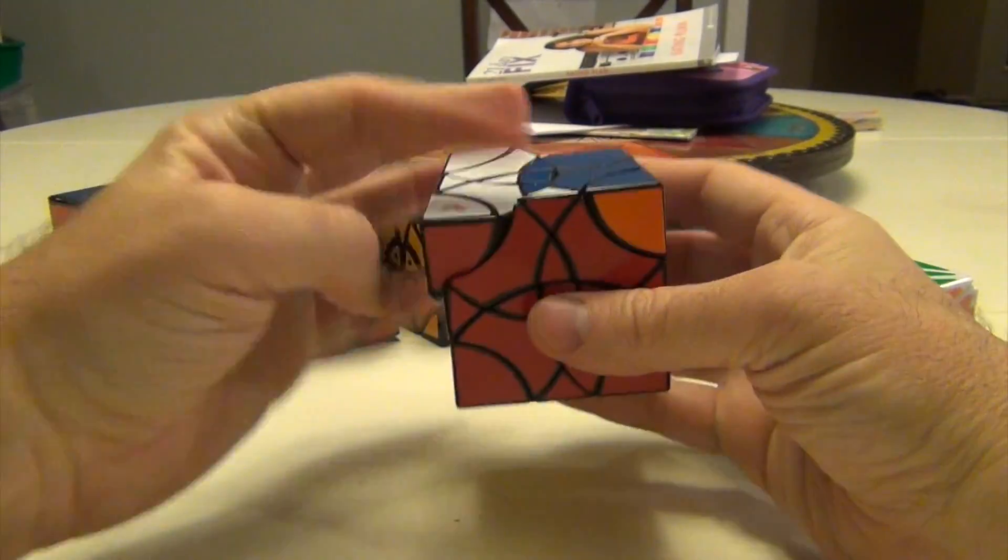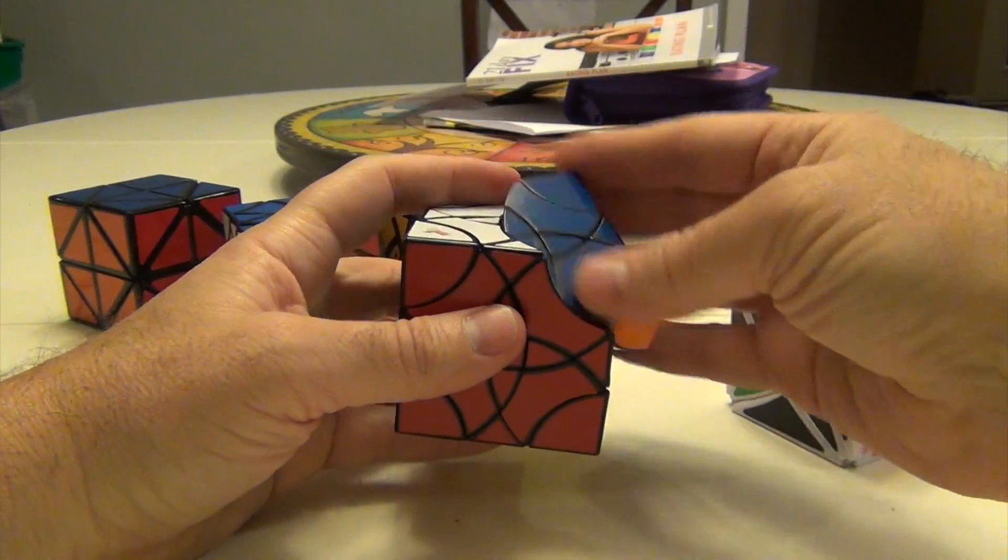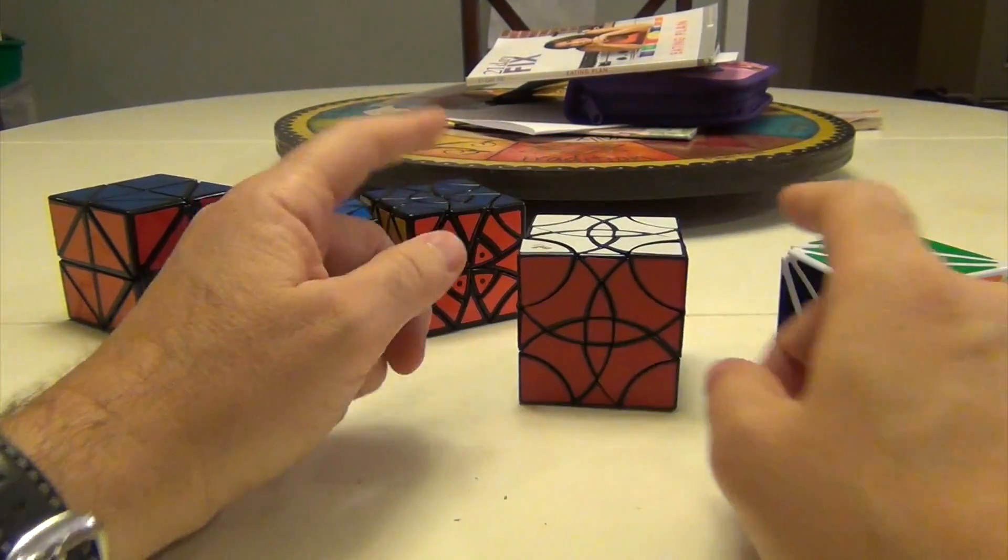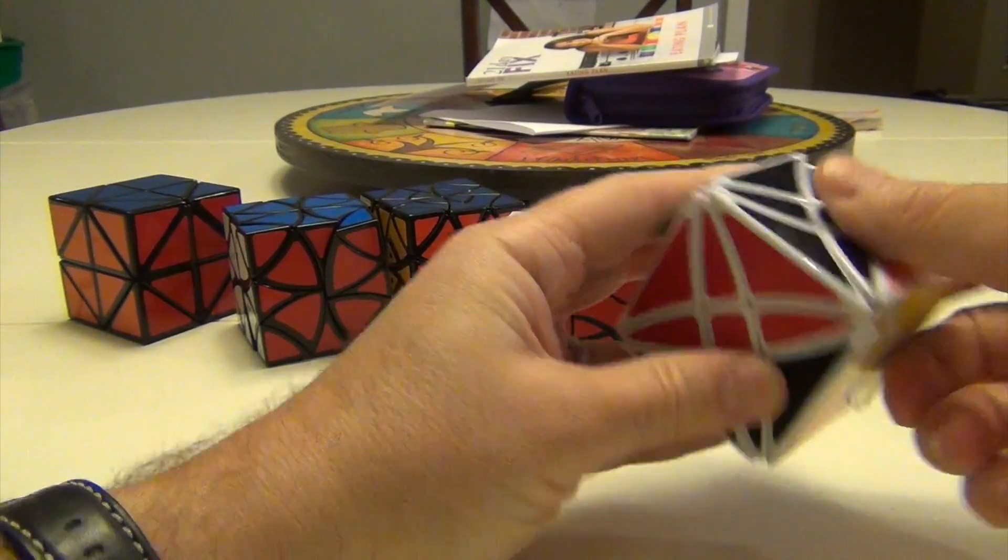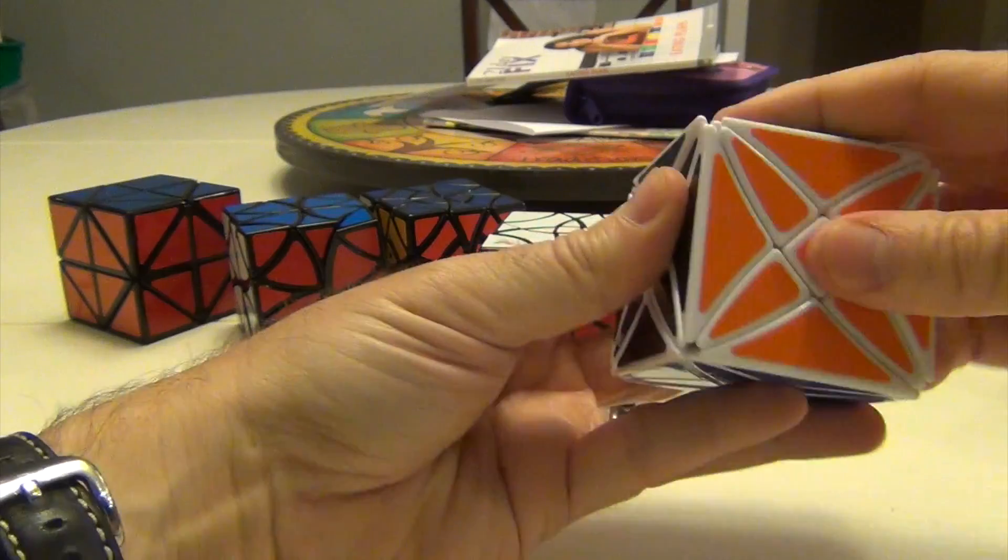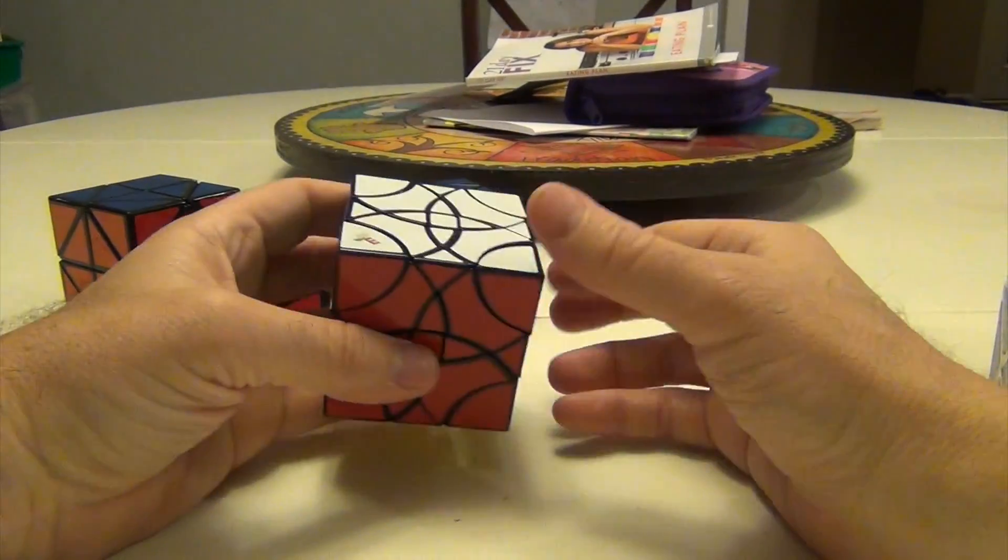So the question is, in terms of solving, how am I going to do this? How is it different? So what I'm going to do is I'm going to go through a scramble and solve of this, including jumbling because it's part of the puzzle. It's part of the appeal. So we might as well.